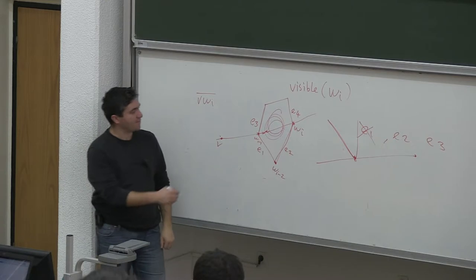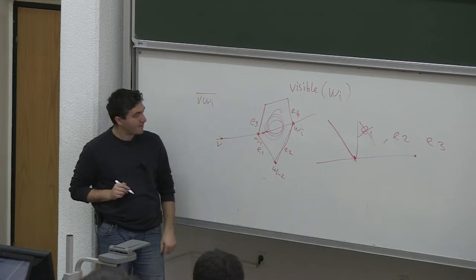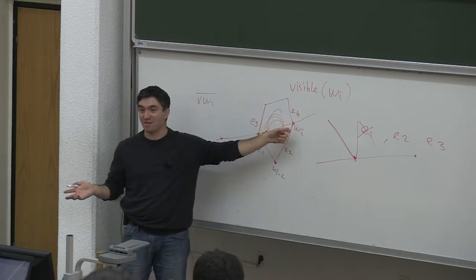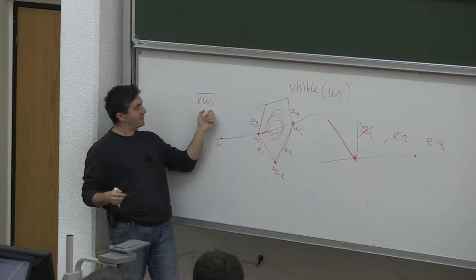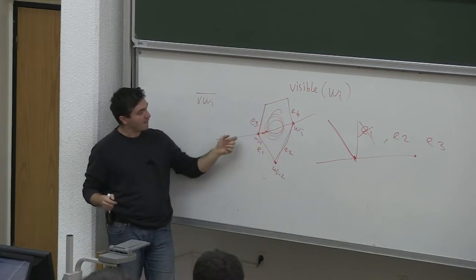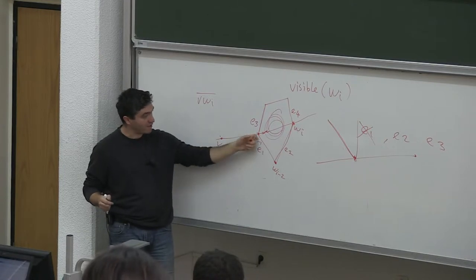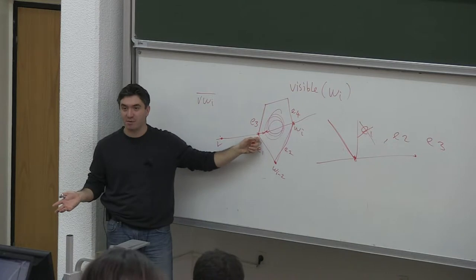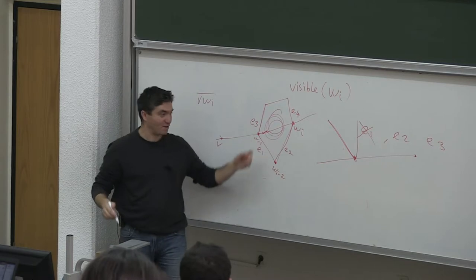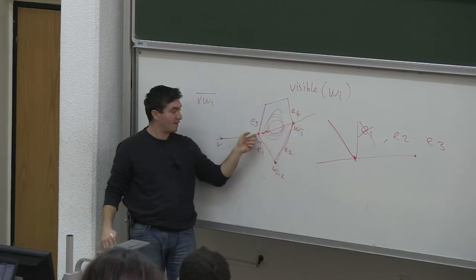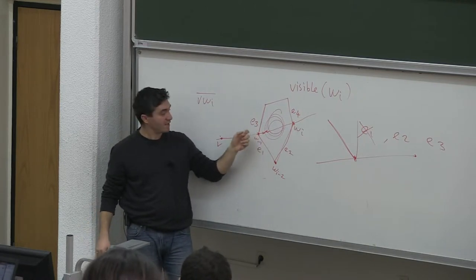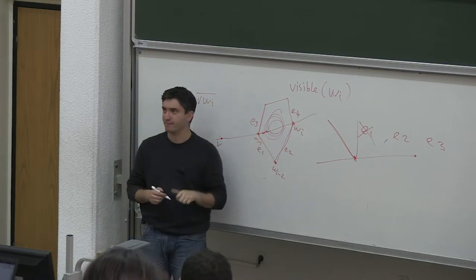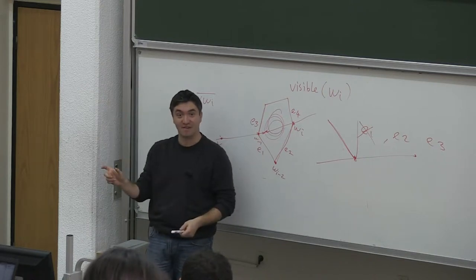This can be checked easily by looking at wi-1. First, if wi-1 was not visible, then wi cannot be visible either — that invisibility propagates to infinity along this line. So we first check whether there is another event point wi-1 on the same line, and then check whether wi-1 is visible itself.